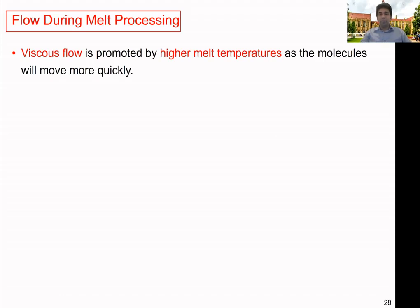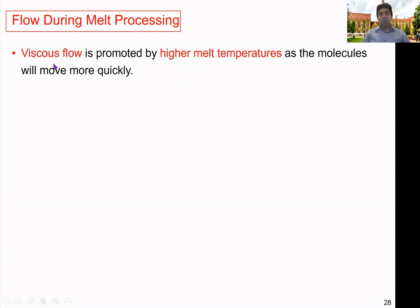Let's look at some important facts related to flow during melt processing. Viscous flow is promoted by high melt temperatures, as the molecules will move more quickly. High melt temperatures promote viscous flow, and we can achieve them by changing the screw speed or by increasing the set or die barrel temperatures to increase the melt temperature of a given material, which promotes viscous flow behavior.